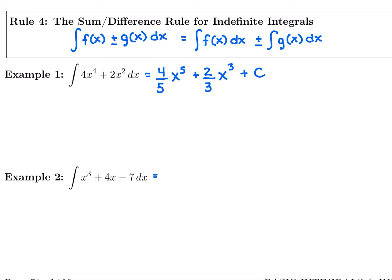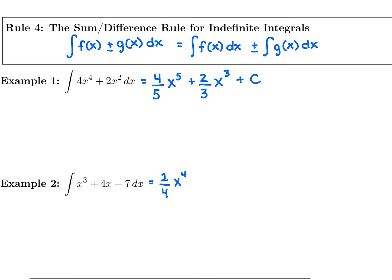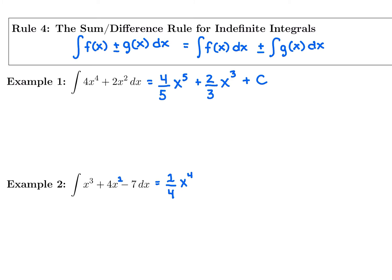For the next one, we're going to do the same exact thing. We're going to take it piece by piece, taking each antiderivative. So first piece we have is x to the 3rd. 3 plus 1 is 4. So I'm going to do 1 over 4, x to the 4. Next piece we have is 4x. So I'm going to add 1 to the power. This is really x to the 1st power when it's not written.